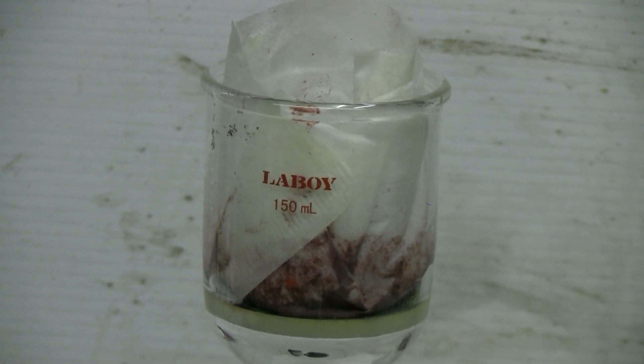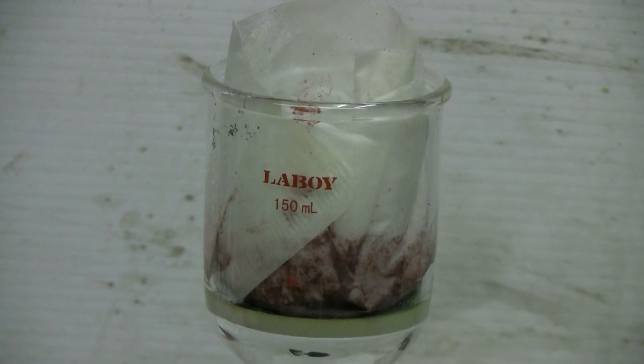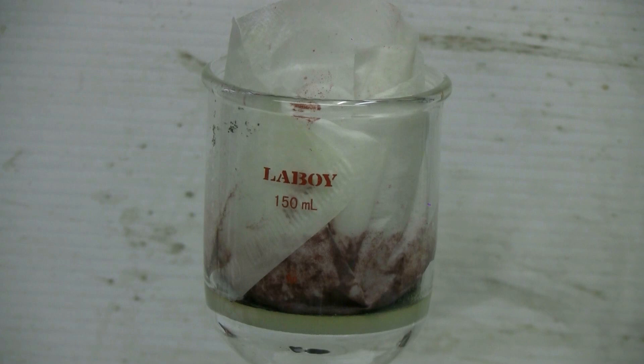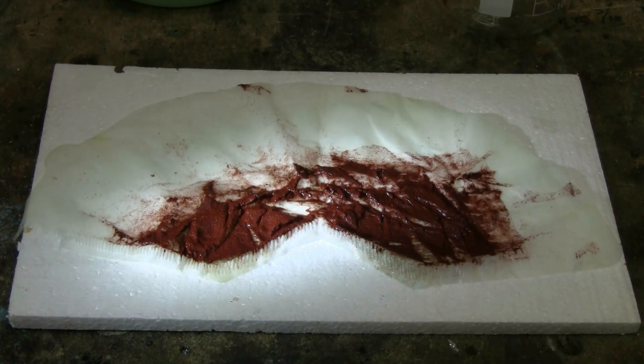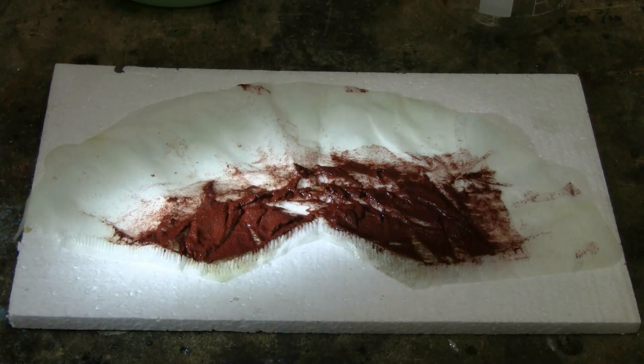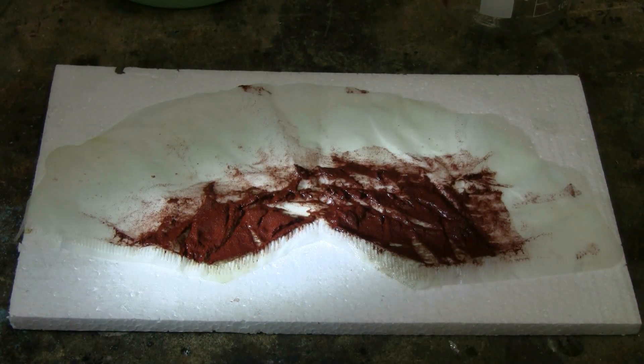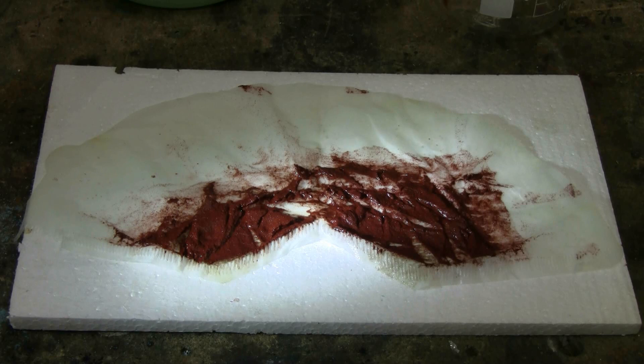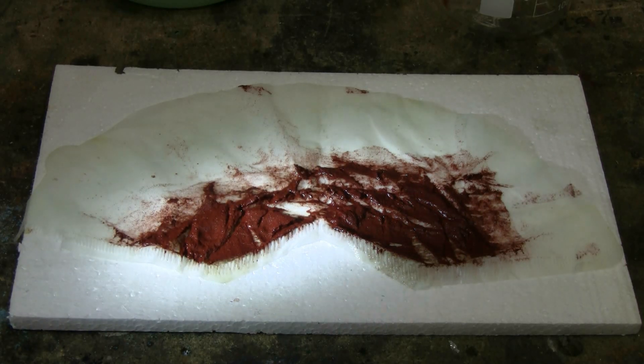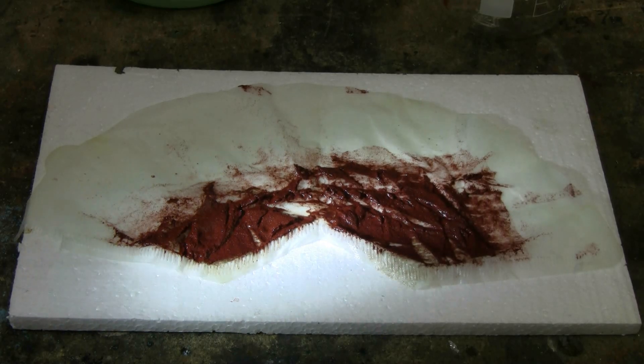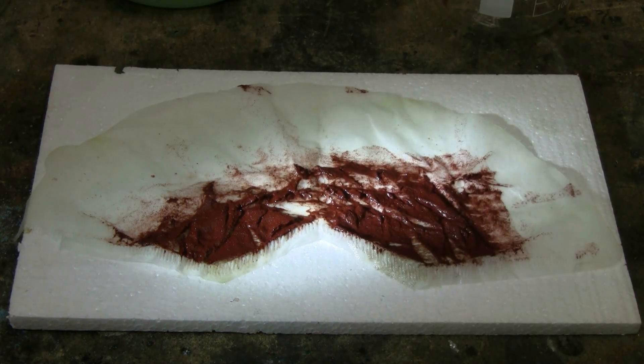The Chevreul salt is now in the filter paper. I'll stop vacuum filtration and get a look at the product when the filter paper's been spread out. Here's a look at the recovered Chevreul salt on the filter paper. As we can clearly see, this is a brick red in color. An interesting color for a copper salt.